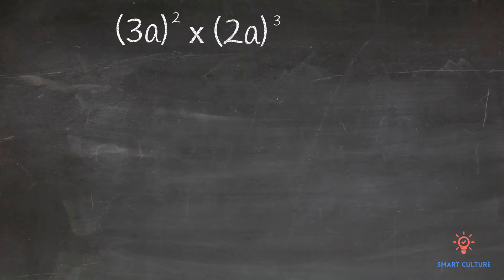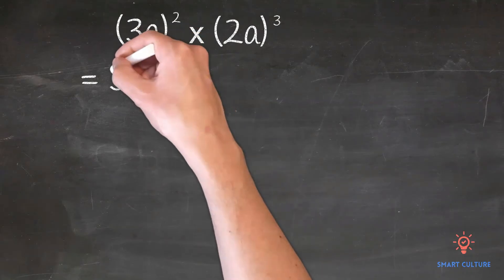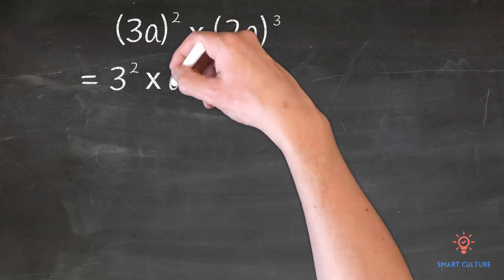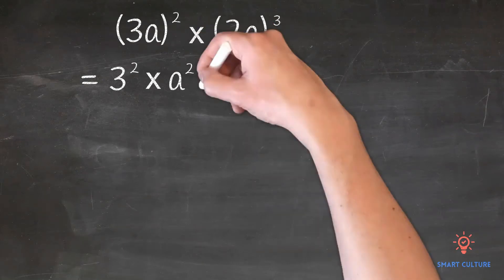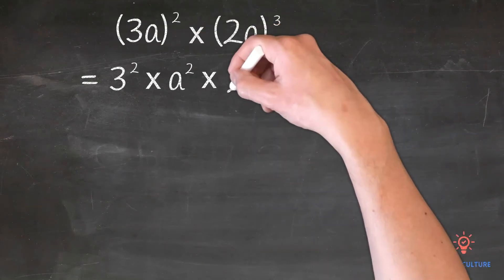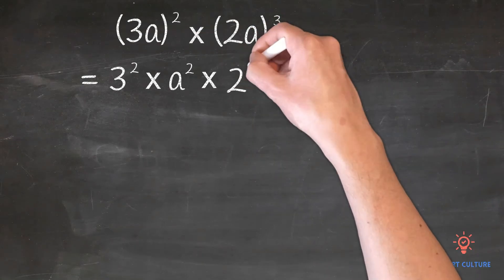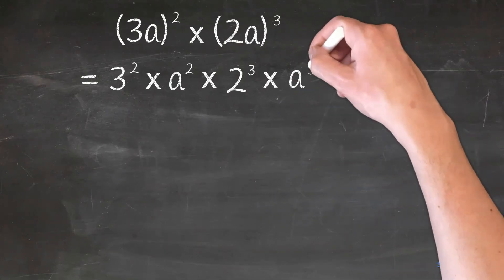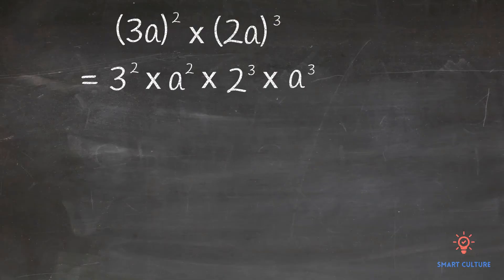This 3 actually has an exponent of 1. 1 times 2 equals 2. This a has an exponent of 1. 1 times 2 equals 2. This 2 has an exponent of 1. 1 times 3 equals 3. This a has an exponent of 1. 1 times 3 equals 3. So now we have 3 squared times a squared times 2 cubed times a cubed.